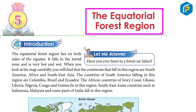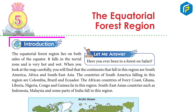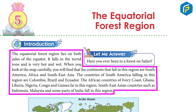The Equatorial Forest Region lies on both sides of the equator. It falls in the torrid zone and is very hot and wet. When you look at the map carefully, you will find that the continents that fall in this region are South America, Africa, and Southeast Asia. The countries of South America falling in this region are Colombia, Brazil, and Ecuador.